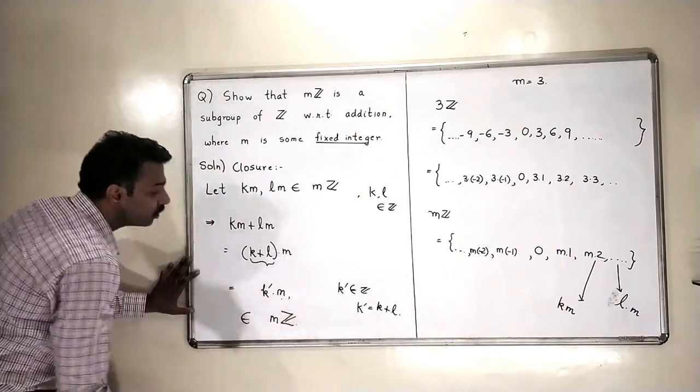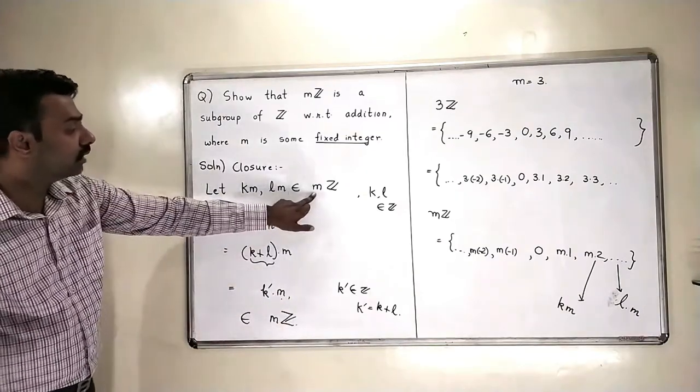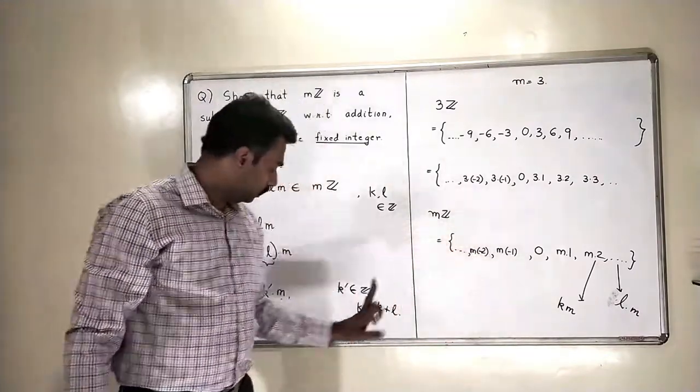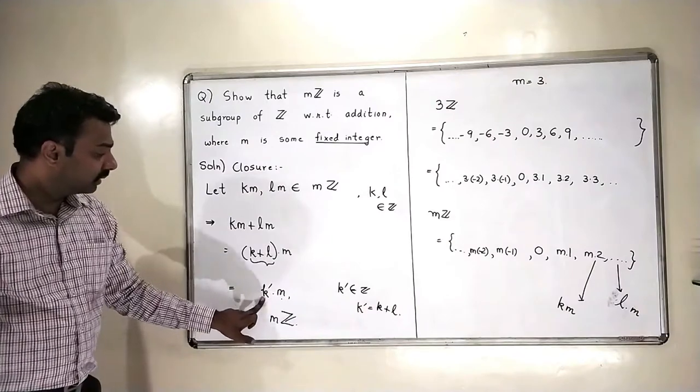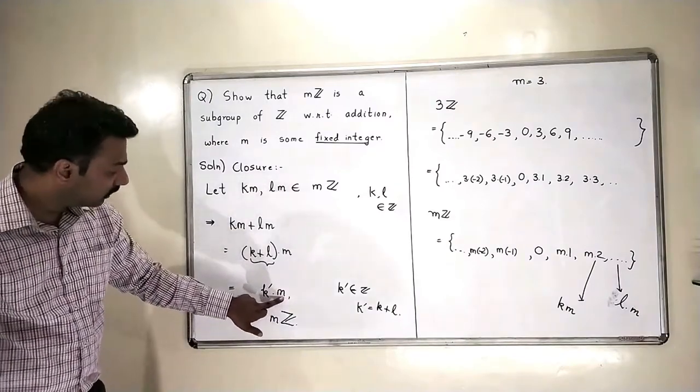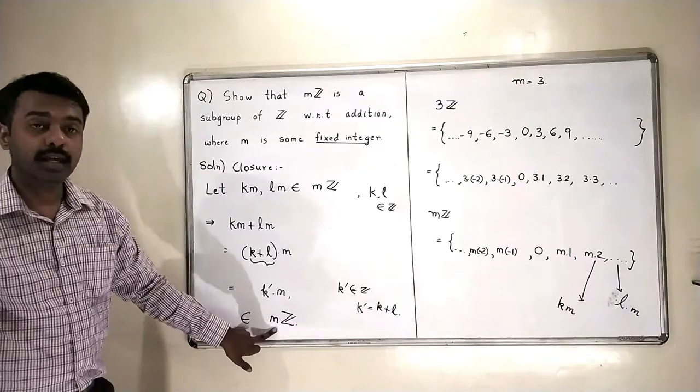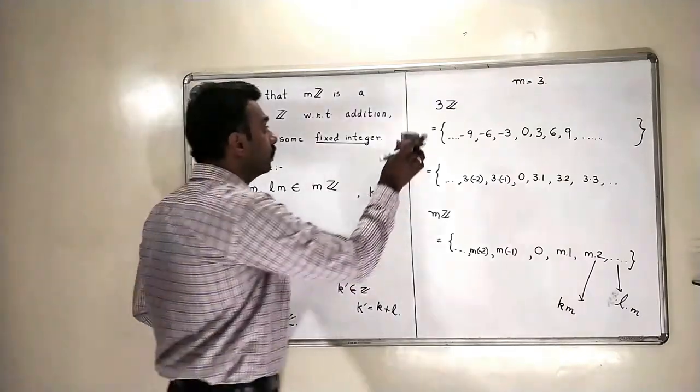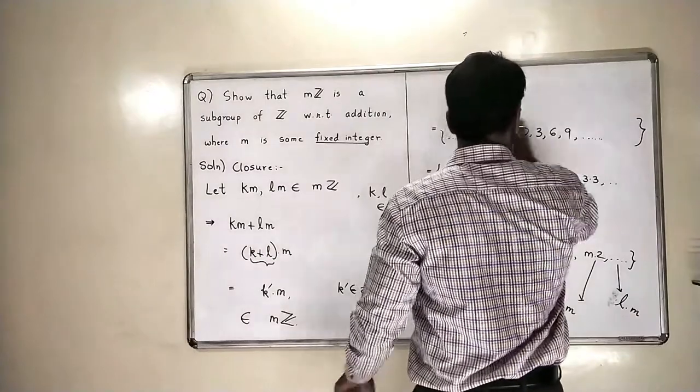So, this means this is also a person which is something multiplied by m. So, this element belongs to mZ because mZ contains all such elements where something is multiplied by m. So, this is also k dash multiplied by m. So, this means that this element is a multiple of m and therefore it has to go in the set mZ. So, this is the closure. So, closure holds.